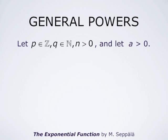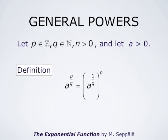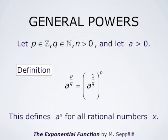If p is an integer, q a positive integer, and a a positive number, then we define a to the power p over q as a to the power 1 over q, and that raised to the power p. We apply the definition of the qth root to a to the power 1 over q, and raise that to the integer power p. This defines a to the power x for all rational numbers x.